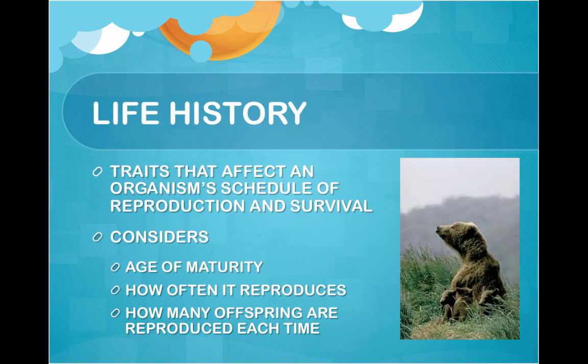Life history traits affect an organism's scheduled reproduction and survival. It considers the age of maturity, how often animals reproduce, and how many offspring are produced each time they mate. Except for humans, animals don't choose when they reproduce or how many offspring they have — this is a result of evolution.